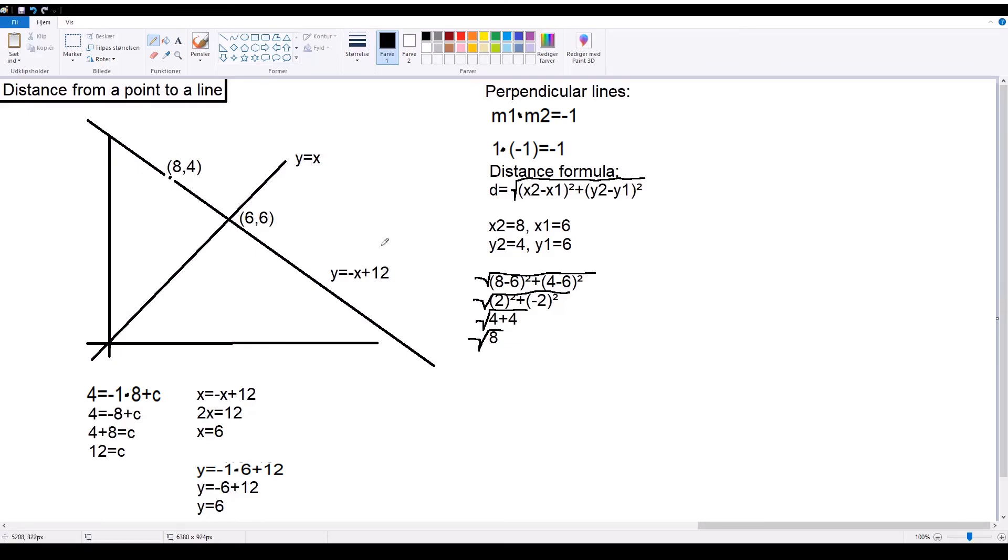Now, usually, when doing this, you wouldn't get the intercept immediately. So, just pretend that this isn't here yet. So, to find out what the intercept is, we use the method we learned before. We simply take the formula y equals negative x and input our values from the point here to make sure that this line goes through this point. So, what we do is, y equals 4, while x equals 8. So, 4 equals negative 1 times 8.